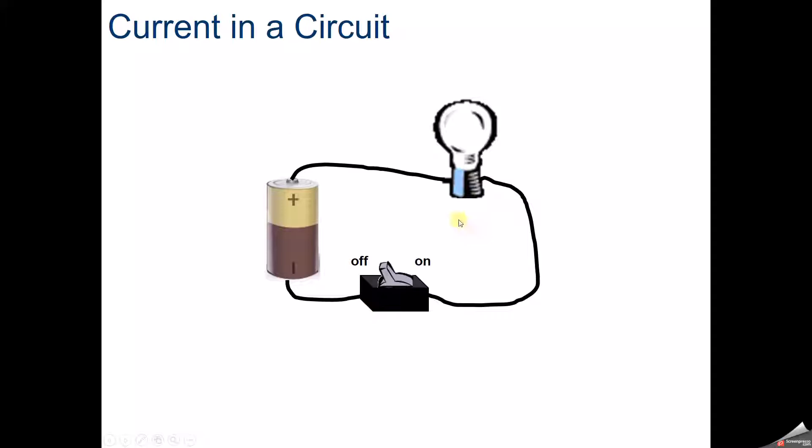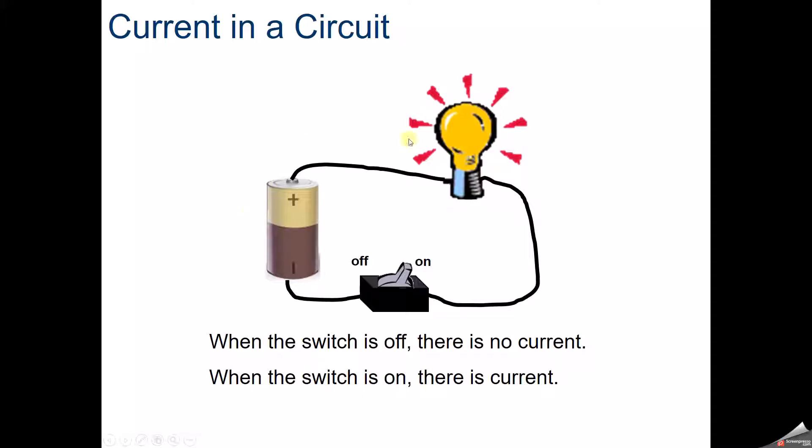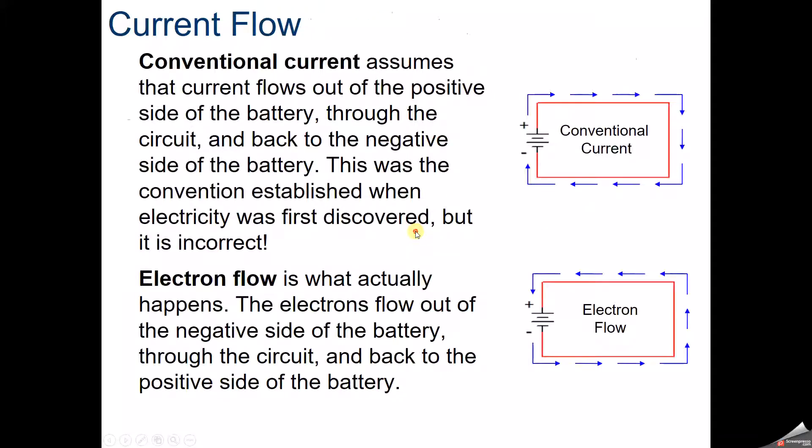Inside our electric circuit, when the switch is off, there is no current. Turn that switch on, and current moves from the positive to the negative side. The electrons are moving through that circuit, so there is current.